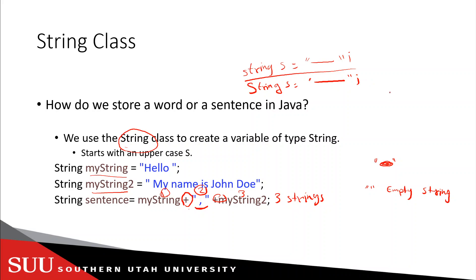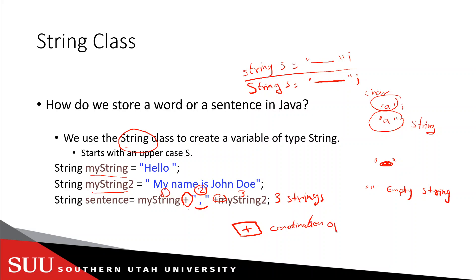Anything in double quotes is a String regardless of what's inside. For example, double quotes with nothing inside is called the empty string. What is the difference between `'a'` and `"a"`? The first one with single quotes is a character, and the second with double quotes is a String. You can add two, three, four, or as many strings as you want. In this situation the plus operator is called the concatenation operator. We will see later that we can also use the `concat` method, but the plus operator is a faster, easier way to combine strings.